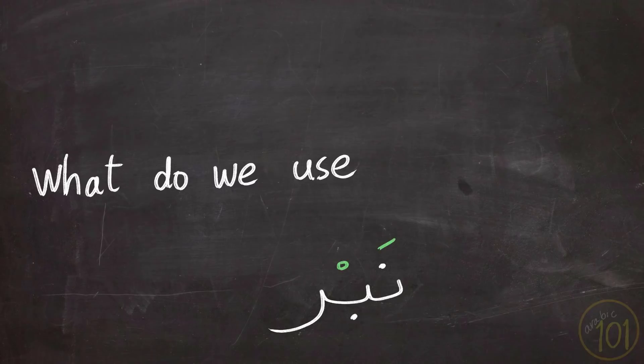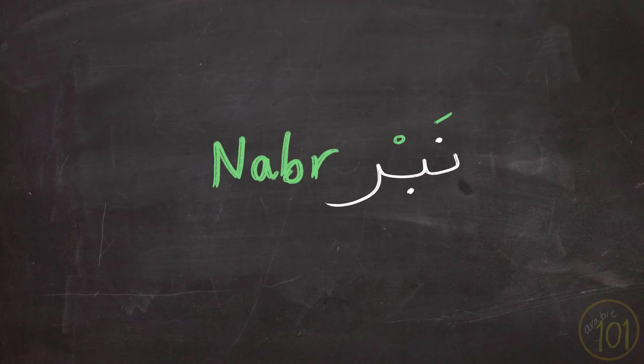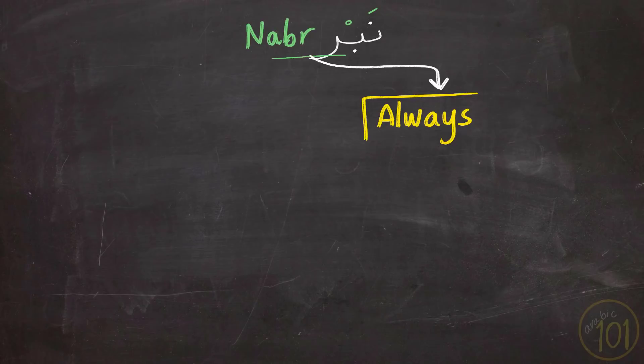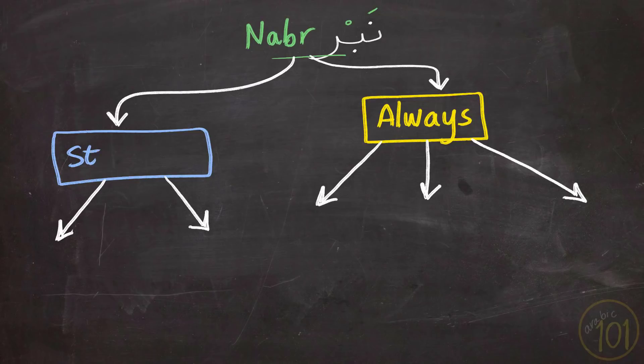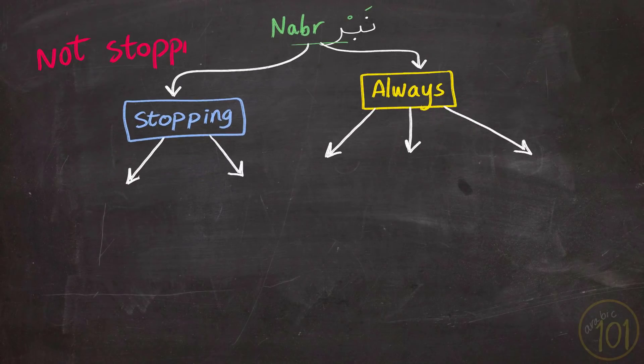So what do we use Nabr for when reciting the Quran? Well, in the Quran, we always use Nabr in three situations. And two other situations only in case of stopping. So if you don't stop, these rules will not apply. But these rules should always be considered when reciting the Quran. Let's start with the more common ones, the ones for which we always use Nabr.